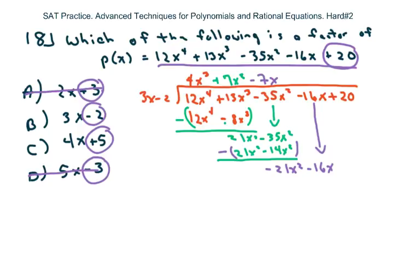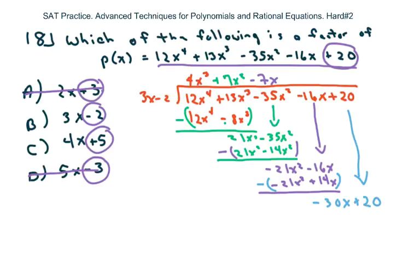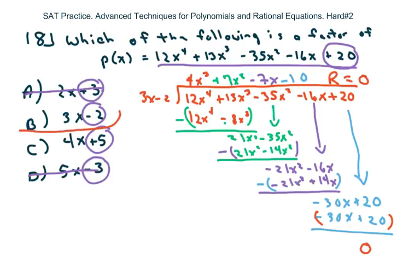The next term is minus 7x. Multiply the binomial to get -21x² + 14x and subtract, which eliminates the first term. That gives -30x. Bring down your last constant. It's going to be negative 10. Multiply the binomial to get -30x + 20. These terms are the same, so when you subtract they give 0. It does divide it — it is a factor because the remainder equals 0. So we got lucky; if it wasn't, we would have tried option c.